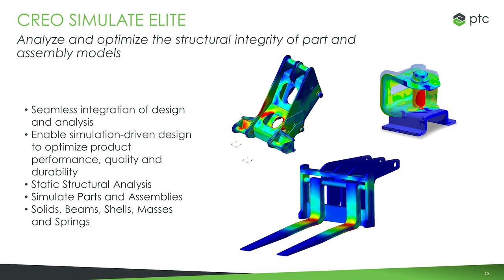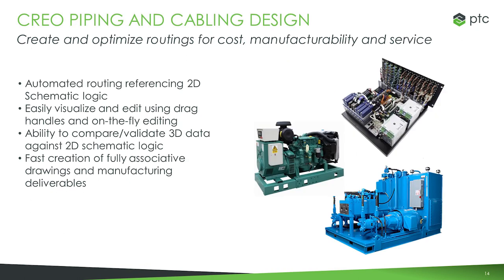This is seamlessly integrated within CREO, so you can jump backwards and forwards between modeling and structural analysis. If you have design changes after running an analysis, you can easily go back, update your mesh, and re-run the analysis. The final thing we're going to run through this morning is piping and cabling — this gives us the ability to run pipes and cables through our assemblies and automatically help us generate our drawings to go along with that.